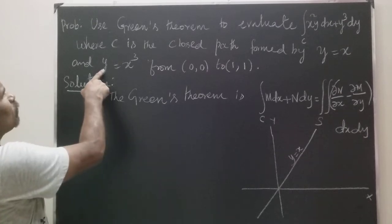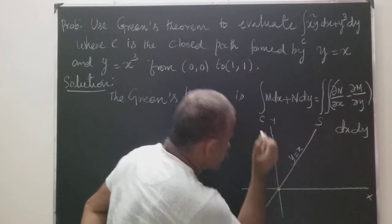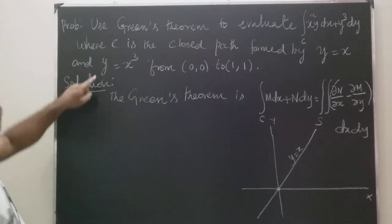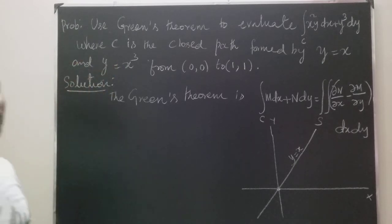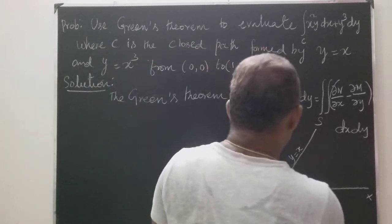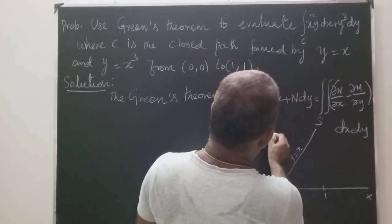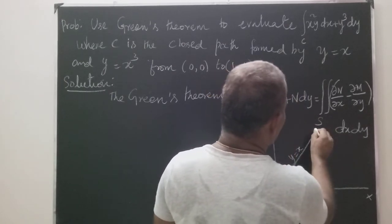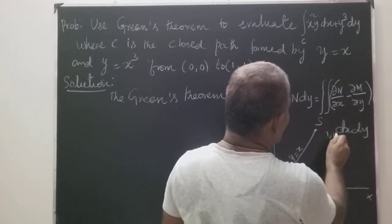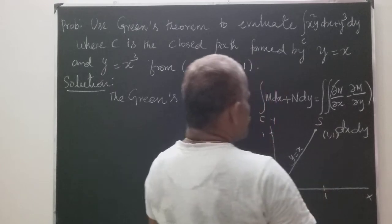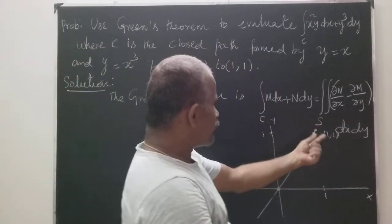When y equals 0, x equals 0, so (0,0) is one of the points. When y equals 1, x is also 1, so the point (1,1) is the other endpoint. So we have two points: (0,0) and (1,1).